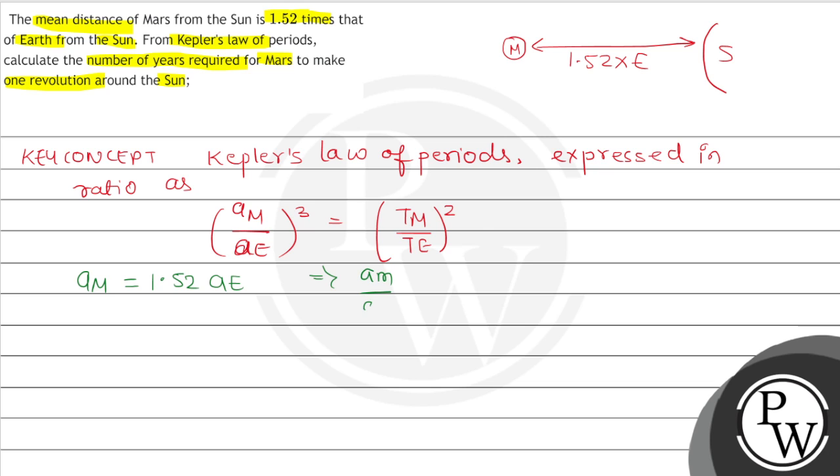To the power 3 is equal to T_M divided by T_E square. This is 1.52 to the power 3 is equal to T_M divided by T_E square. If we solve this we will get T_M is 1.87 years times T_E.